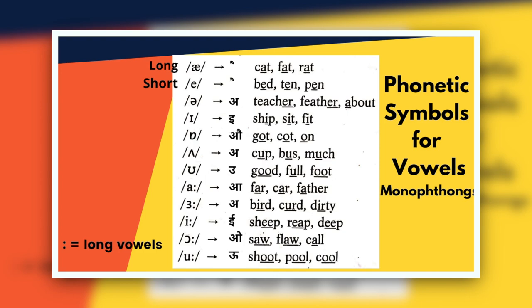The next symbol is an inverted E, for the schwa sound 'uh,' as in teacher, feather, about — not 'teacher' or 'feather,' but 'teacher,' 'feather,' 'about.' The next symbol is for the short I sound, as in ship, sit, fit. The next one is for the short O sound, as in got, caught, on. The following symbol is for the short U sound (inverted V), as in cup, bus, much. The next one is for the short OO sound, as in good, full, foot.